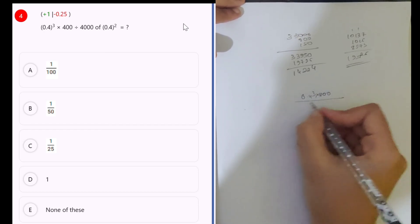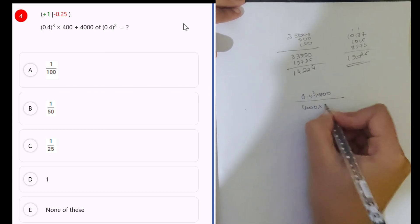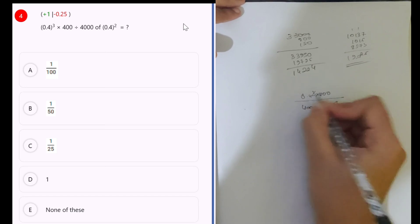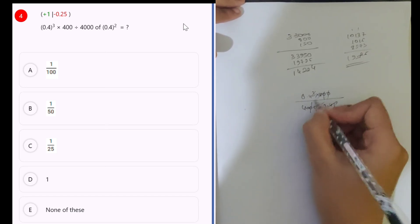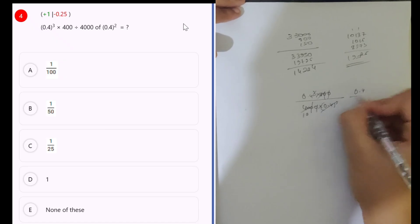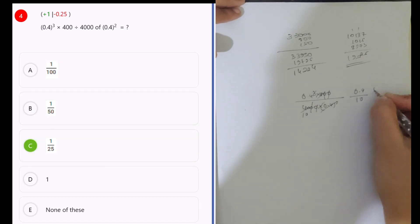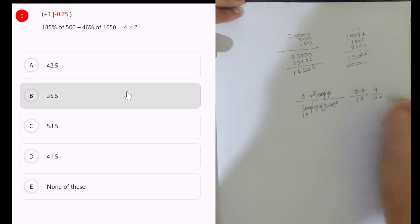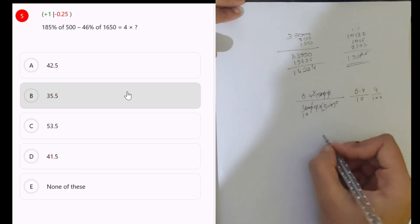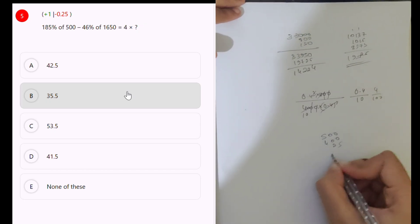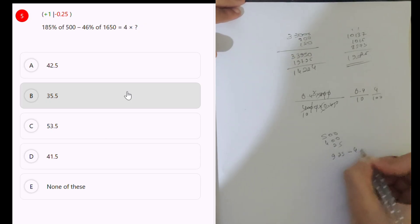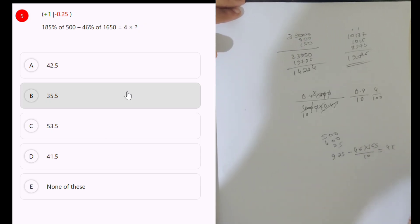4 divided by 4 means 1 by 25. Next: 185 percent. 500, 100 percent 80 is 400, and 5 percent 9 25. 925 minus 46 into 165, minus 46 into 165, divided by 10, which is equal to 4x. 165.